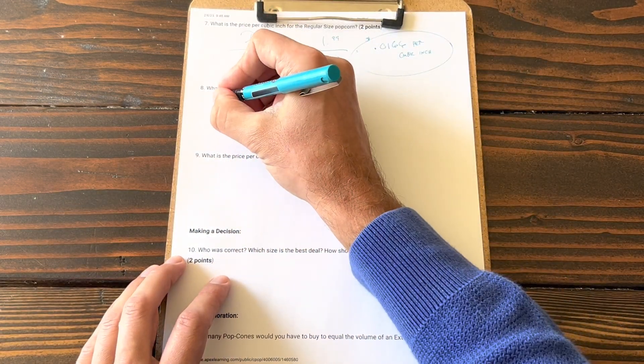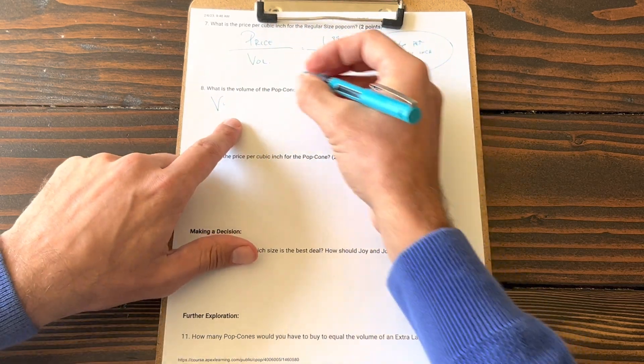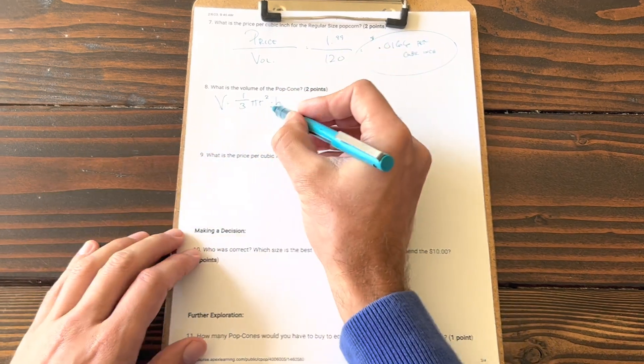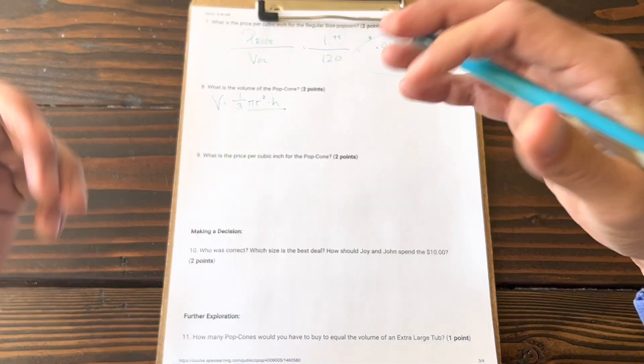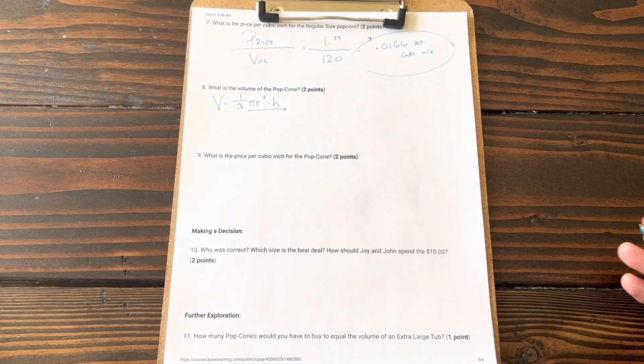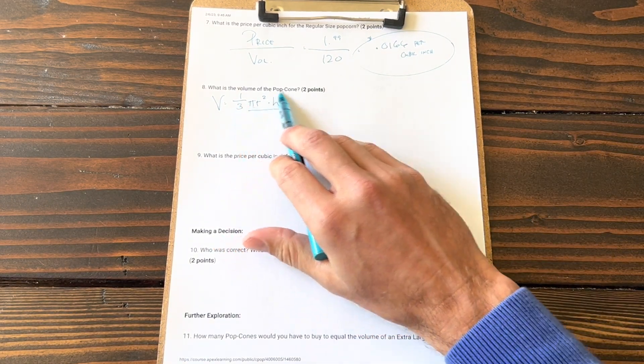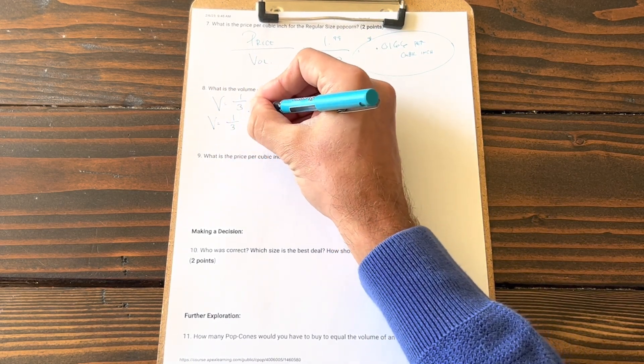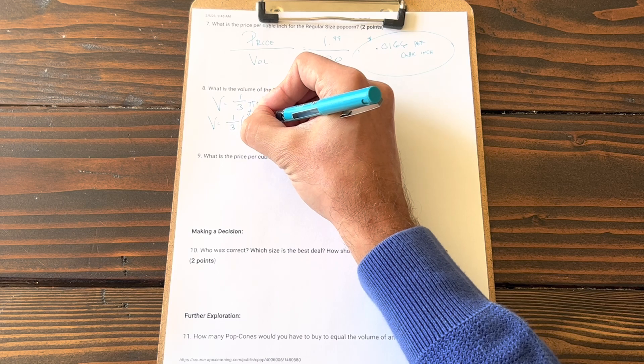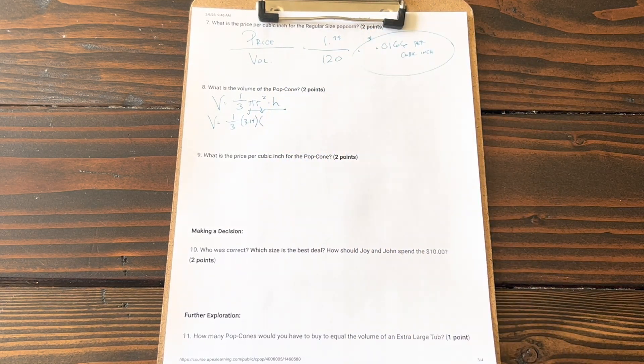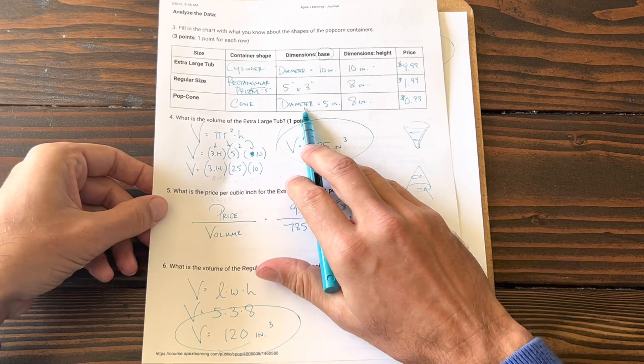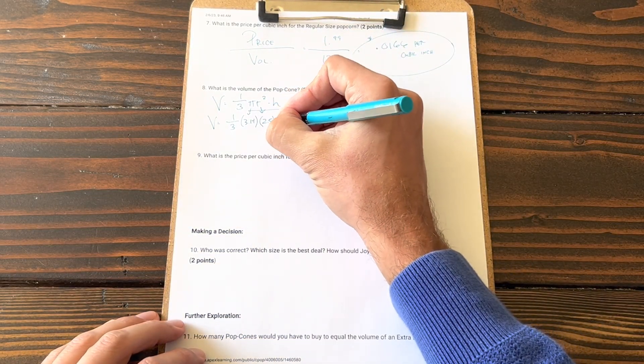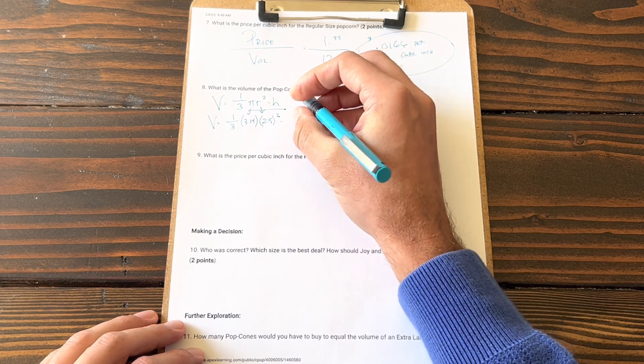Volume of the popcorn: we need the volume of a cone formula. Volume of a cone is one-third π r² h. It's essentially a cylinder's volume, but then we take a little bit less because obviously the cone has less volume than a full cylinder, so we take a third of the cylinder's volume. Volume equals one-third π is 3.14. The radius—if the diameter recall was 5—therefore the radius is 2.5, squared, times the height, and the height was 8 inches.